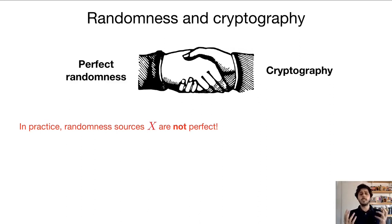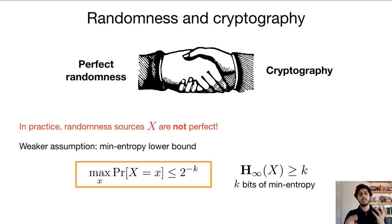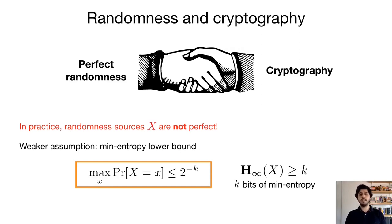A well-known and very well-studied way of doing this is just by assuming a lower bound on the min entropy of the source, which is a much more relaxed assumption. We may say that a weak source has k bits of min entropy for some k, and this means that the probability of any outcome of the source is upper bounded by 2 to the minus k.